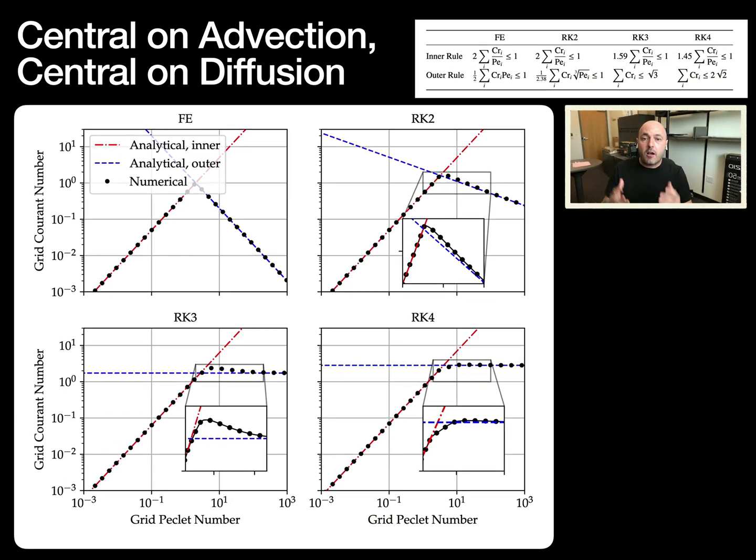To verify our formulas, we compare the proposed formulas shown here in the table to numerically obtained stable time-steps and Courant numbers. We took the stability polynomial and solved for the stable time-step based on different eigenvalues, different Peclet numbers. So we varied the advecting velocity, the grid resolution, and the diffusion coefficient. Our formulas are shown in red and blue for inner and outer, respectively, and the numerical ones are shown in these black dots. The proposed formulas are very good representations of those numerical curves.